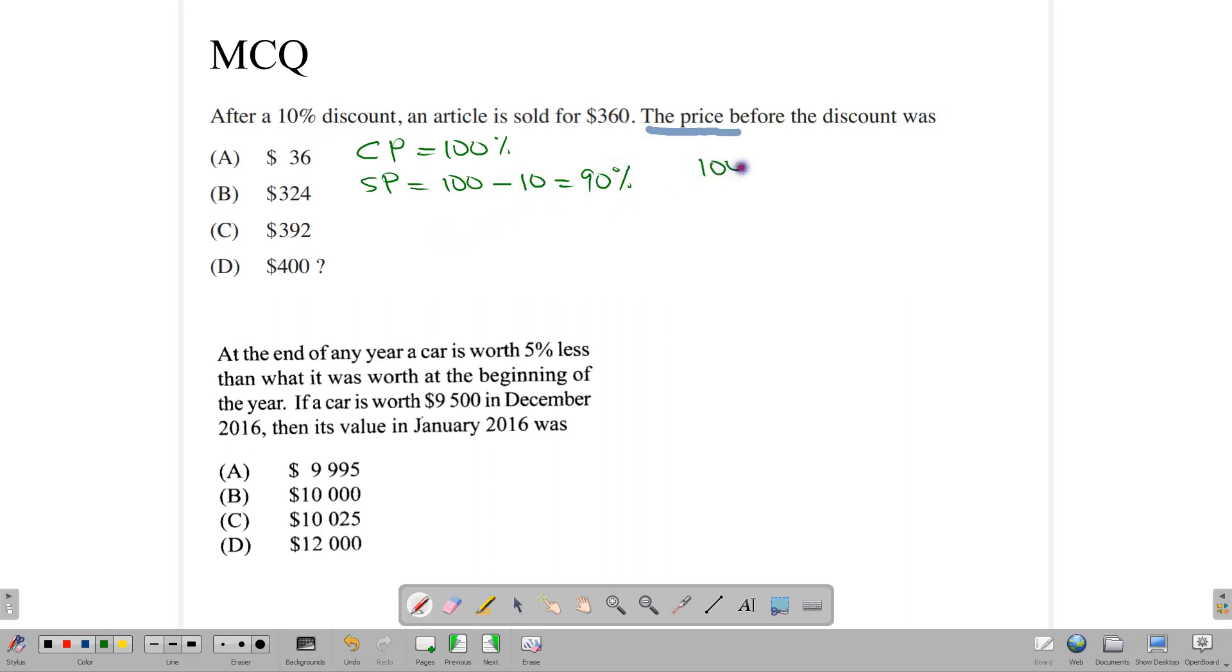And so to answer our question, what we're going to do is to say 100 over 90 multiplied by 360, because 360 is actually the selling price. It is sold for. We can divide our 90 into 360, and that gives us 4. And so 4 times 100 here gives us the initial cost price of $400. So it was initially valued at $400, and because of the discount, it was dropped down to 360.